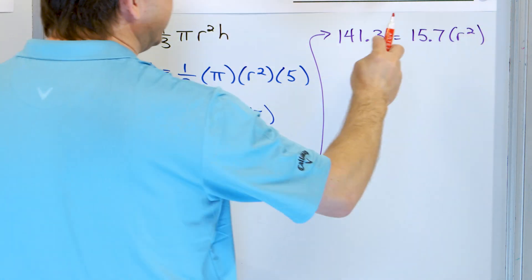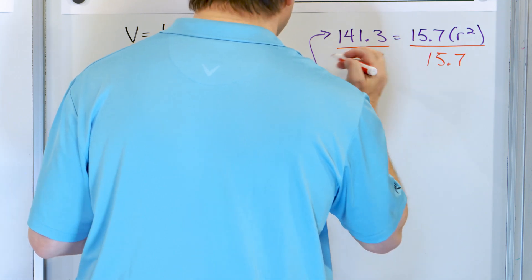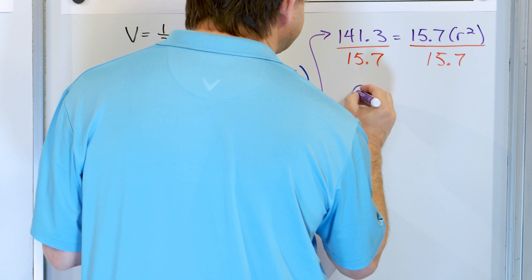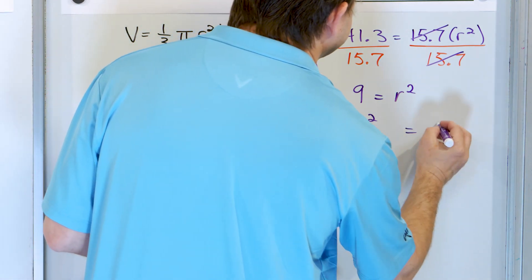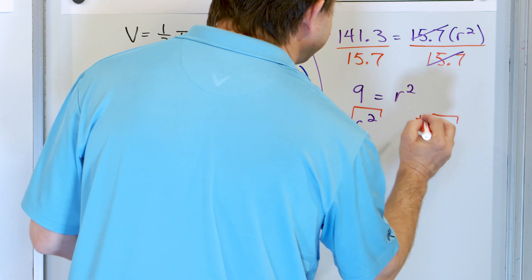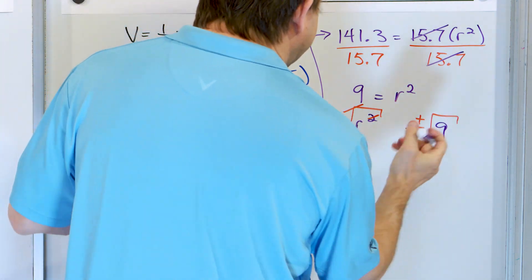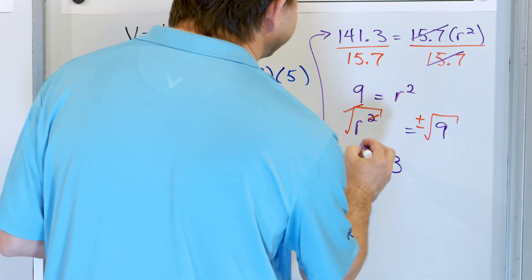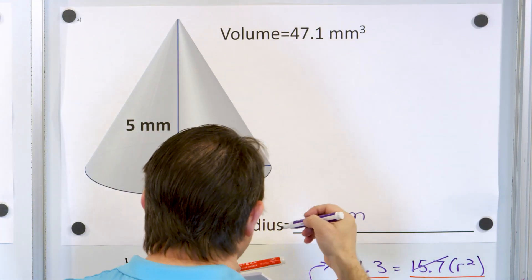Now, how do we get closer to the answer? We want to get rid of this 15.7, but it's multiplied, so we do the opposite — we divide by 15.7 on both sides. If you take 141.3 divided by 15.7, you'll get 9. On the right-hand side, the numbers cancel and you're left with r squared. So r squared equals 9. To get rid of the square, we take the square root of both sides, adding plus or minus. The square root cancels the square, leaving r equals 3, and we throw away the negative. The radius is 3 millimeters.